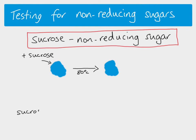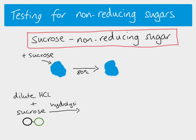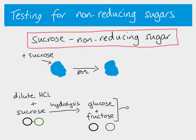Sucrose is a disaccharide made up of a glucose molecule bonded to a fructose molecule. You add dilute hydrochloric acid to the sucrose, which causes a hydrolysis reaction — the acid splits up the disaccharide. Hydrolysis means splitting using water. The sucrose is hydrolysed into glucose and fructose monosaccharides. Because they are monosaccharides, they are now reducing sugars. You then take what you have, add it to Benedict's reagent, and heat it at 80°C, and you will get a positive test.